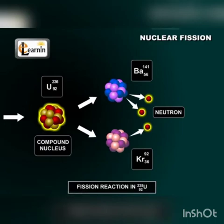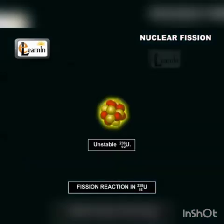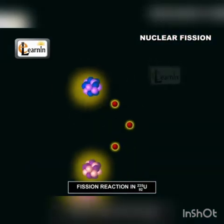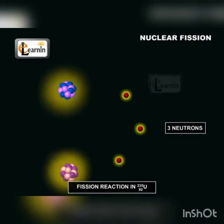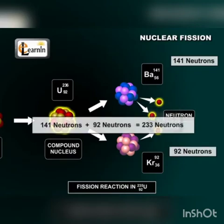You should notice that a barium atom has 56 protons and a krypton atom has 36 protons, which add up to the uranium atom's 92 protons. The unstable uranium-236 nucleus also releases three neutrons in the process. This happens because barium-141 has 141 neutrons and krypton-92 has 92 neutrons, adding up to a total of 233 neutrons. To balance the equation, uranium-236 must emit three more neutrons.